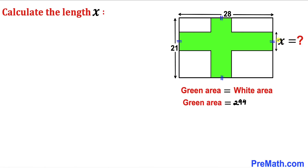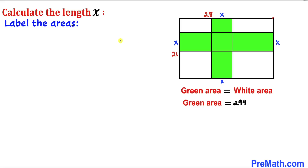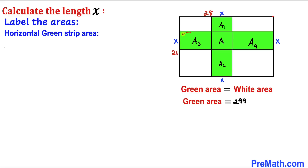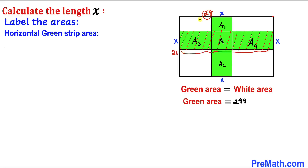Since this length is x, the corresponding lengths on each side are also x. Now let's label the area compartments: I'll call the center area A, and the surrounding sections A₁, A₂, A₃, and A₄.